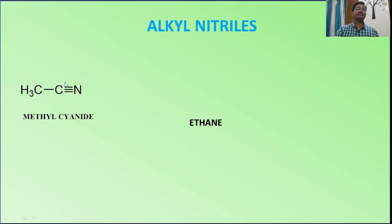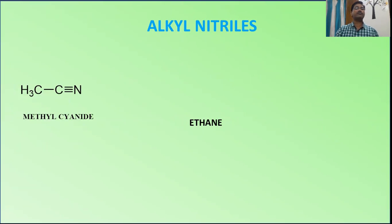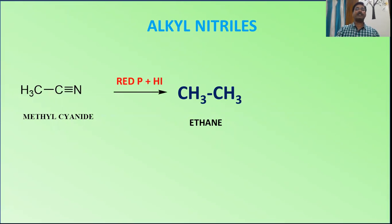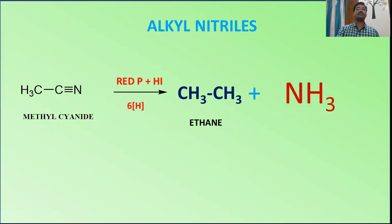For alkyl nitriles — methyl cyanide (cyanomethane or methanenitrile) — there are two pi bonds. When treated with our reagent, it converts into ethane. The carbon takes three hydrogens and the nitrogen takes three hydrogens, so six hydrogens are required for this conversion.